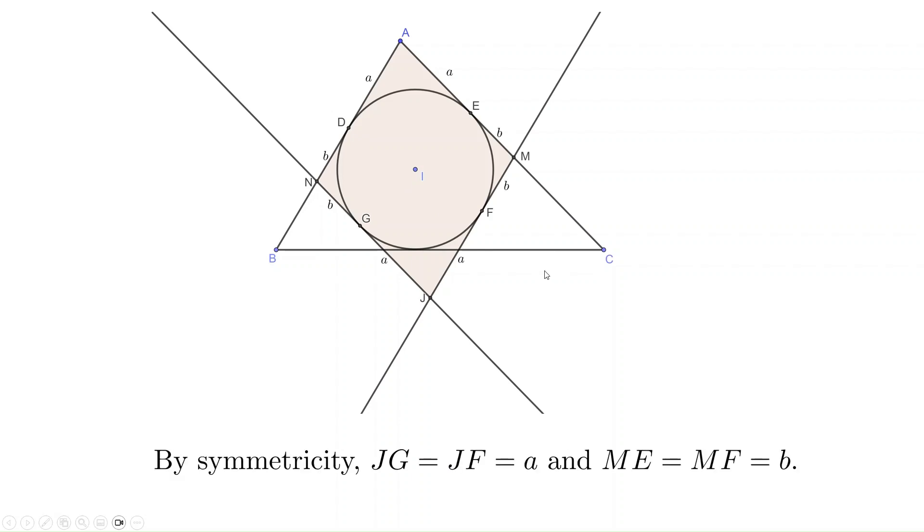By symmetry, we have JG and JF equals a on the top side, and ME and MF equals b, similar to ND and NG. Then all four sides of the parallelogram AN, NJ, JM, MA all have side length a plus b. So it is a rhombus.